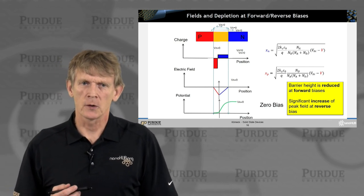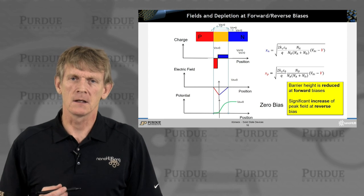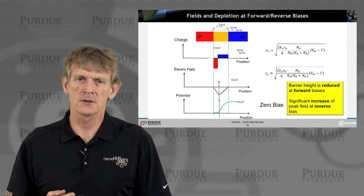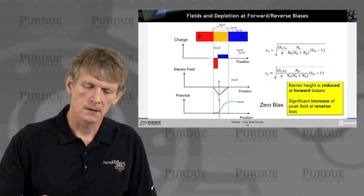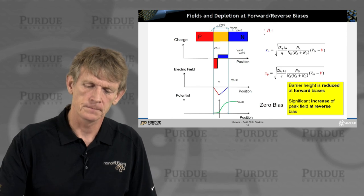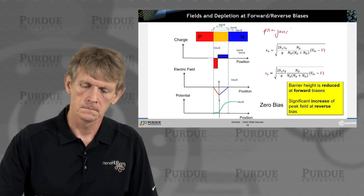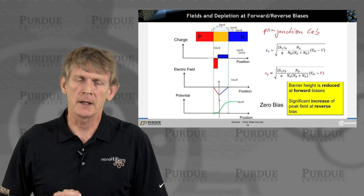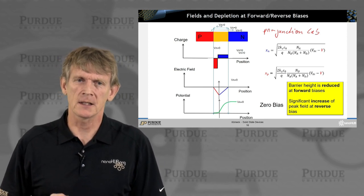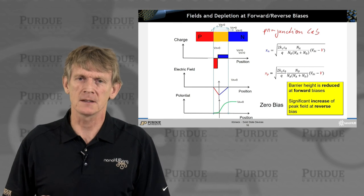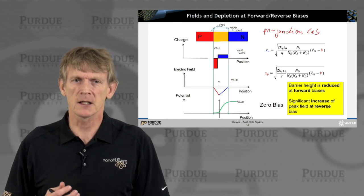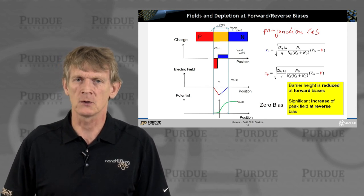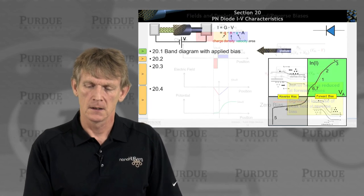And I would suggest that you go on nanoHUB and go into the PN junction lab. And plot, as a function of bias, these electrostatic potentials, the fields, the electron density, etc., and play around to kind of get a feeling for how these depletion regions extend and narrow and what happens to the electric field and to the charges.